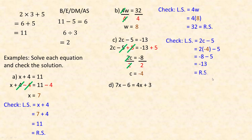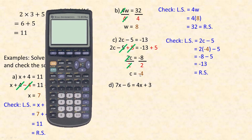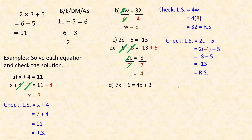Check for Example C: left side is 2c minus 5, substitute negative 4 for c — 2 times negative 4 is negative 8, subtract 5 equals negative 13, which matches the right side. If instead I put positive 4 in: 2 times 4 subtract 5 doesn't equal negative 13, so positive 4 is not the right answer. That's how the check can show you that you made an error.